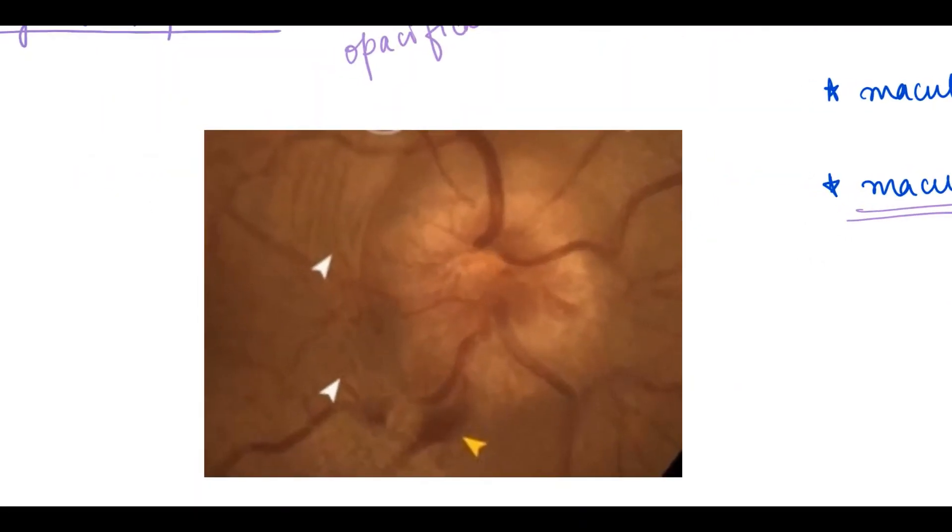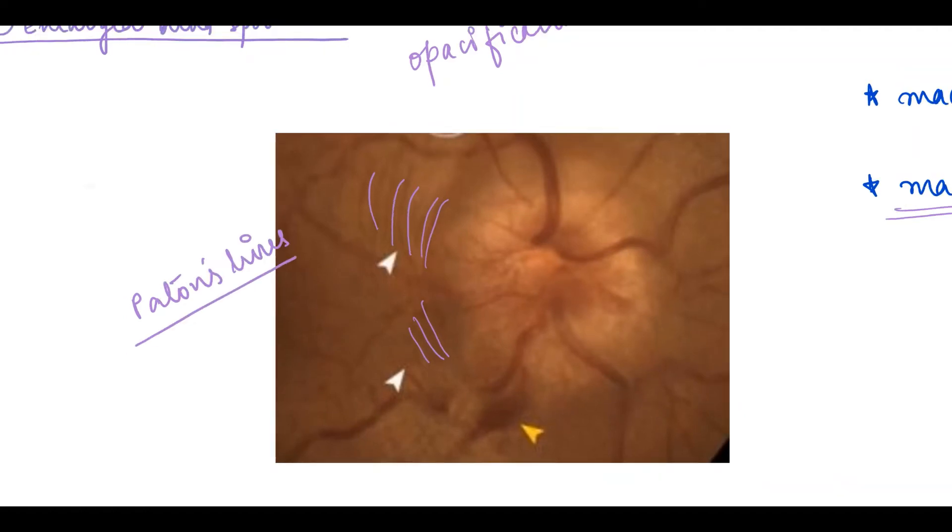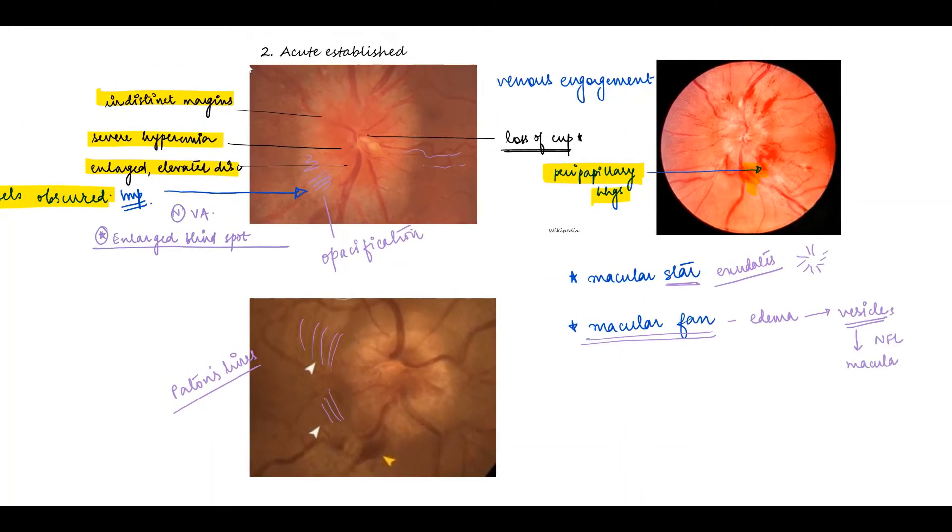One more finding seen here are these circumferential folds around the disc. These are known as Paton's lines, which are circumferential folds because of the edema that throws the surrounding retina into folds.